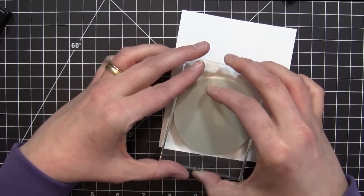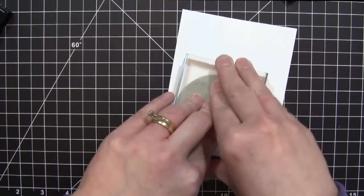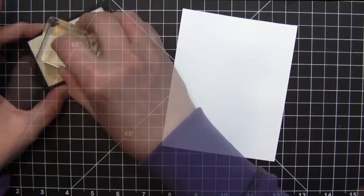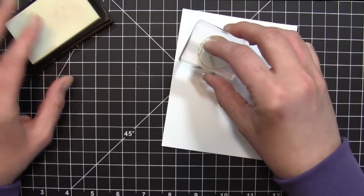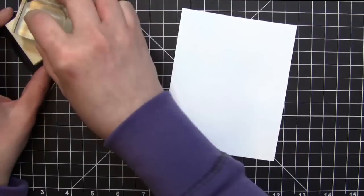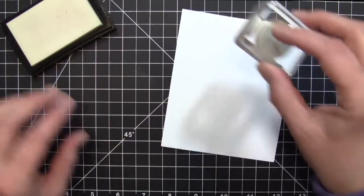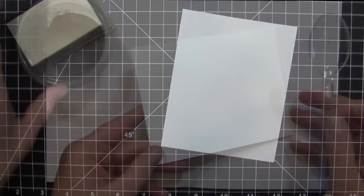I'm stamping onto a piece of whisper white cardstock, pressing down really well to make sure I get all the Versamark onto my cardstock. Then I'm taking a medallion stamp from that same stamp set and stamping that out twice in the Versamark.